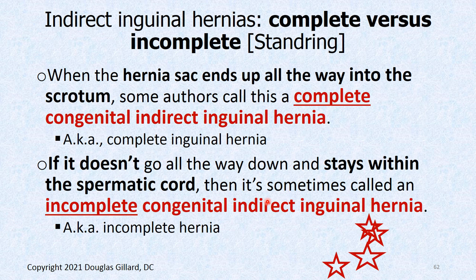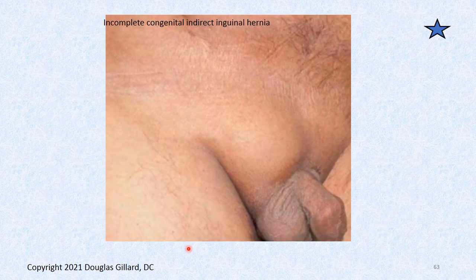From Gray's Anatomy (Stand Ring), indirect inguinal hernias are classified as complete versus incomplete. When the hernia sac ends up all the way in the scrotum or down to the mons pubis, those are called complete congenital indirect inguinal hernias. Incomplete means it stays within the inguinal canal. These terms could appear on board exams.